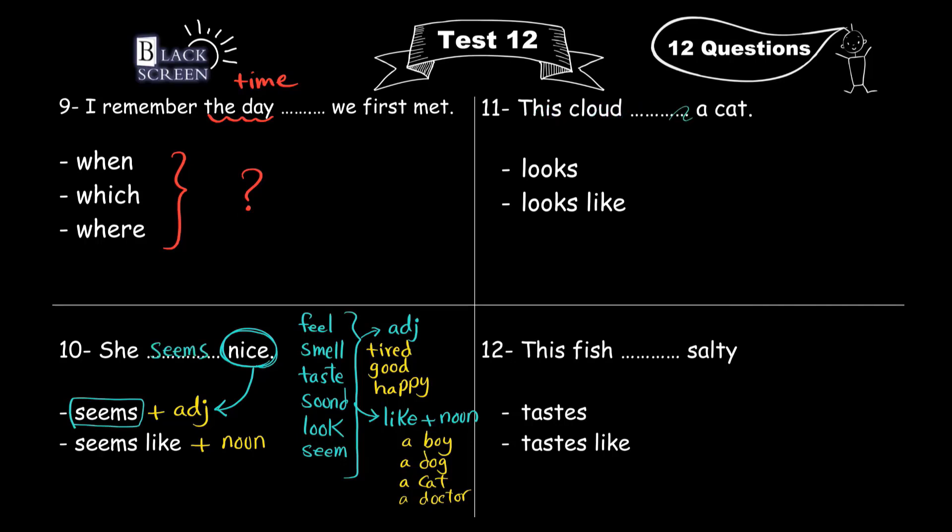This cloud, blank, a cat, looks, or looks like. Again, looks is followed by an adjective. And looks like is followed by a noun. A cat is a noun. It's a name of something. So this is the answer. This cloud looks like a cat.